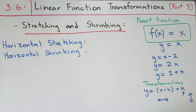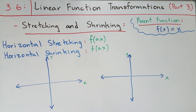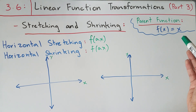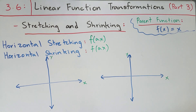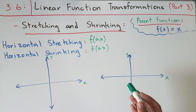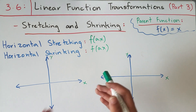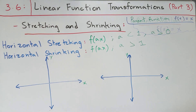The first type is horizontal stretching and horizontal shrinking. The general equation is f of a times x. When we talk about horizontal transformations, we're dealing with the x value — your independent variable — because x deals with the horizontal axis. In this expression f of ax, you're multiplying the horizontal component of the function by some constant a, which makes it stretch or shrink depending on the value of a.